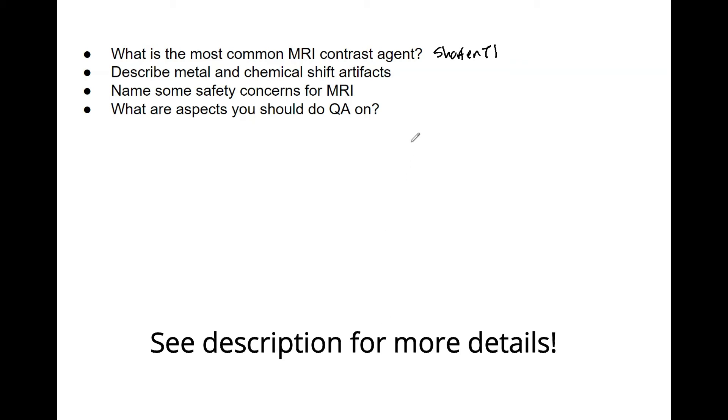What are aspects you should do QA on? First thing is spatial distortion. This is very important - you're banking on MRIs being exceedingly accurate, but with the slice thickness and the axial distance accuracy, you need to ensure there is no distortion because you may not be able to tell within the image itself, and that will lead to errors when treatment planning.